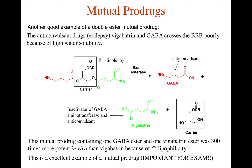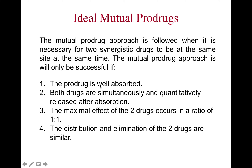Another example of a mutual prodrug is one where GABA and Vigabatrin are linked via a linker and a carrier. This molecule is 300 times more potent compared to GABA and Vigabatrin on their own, which is another example of the mutual prodrug approach.